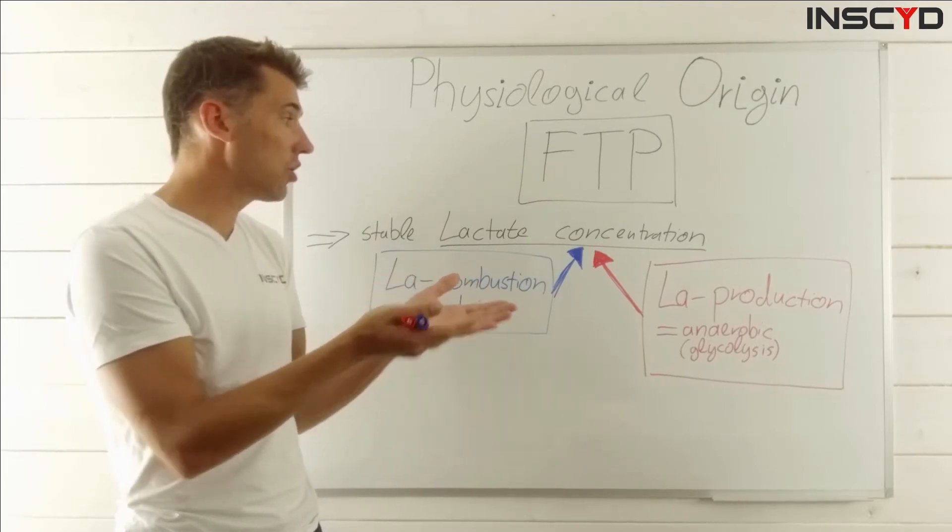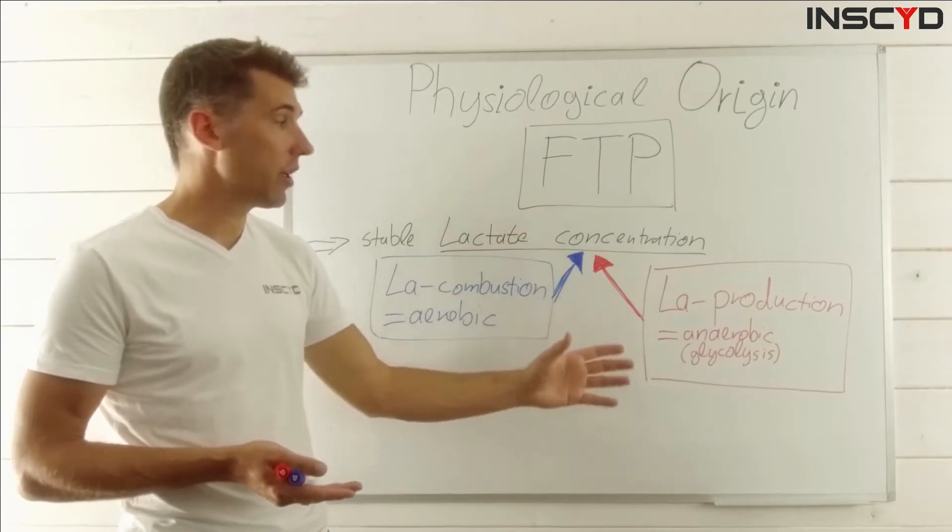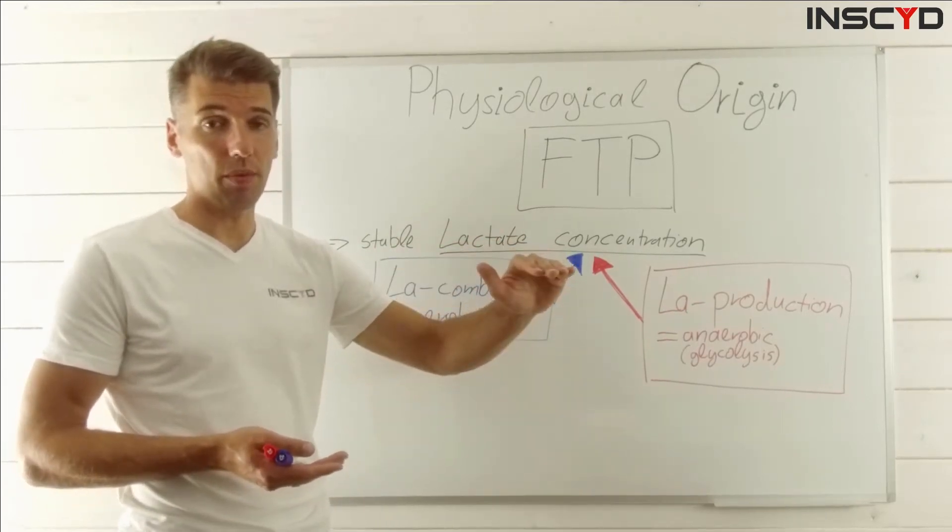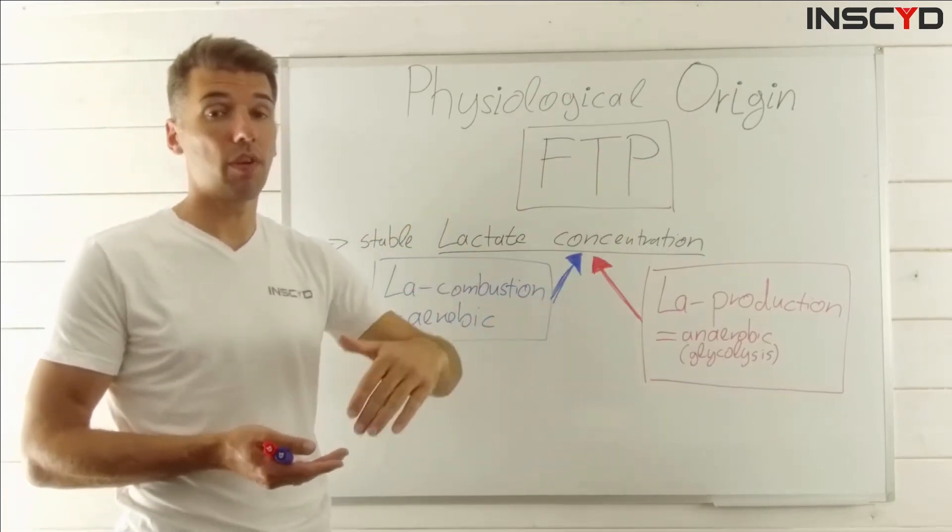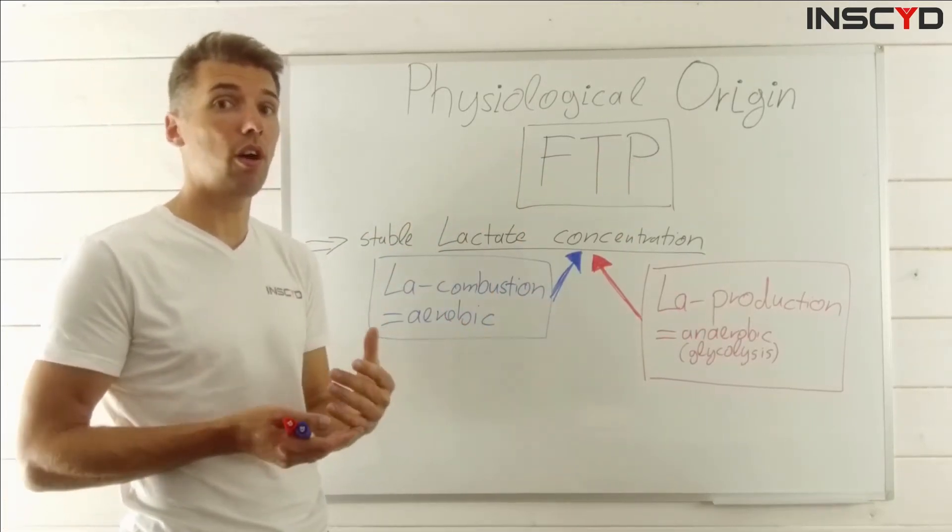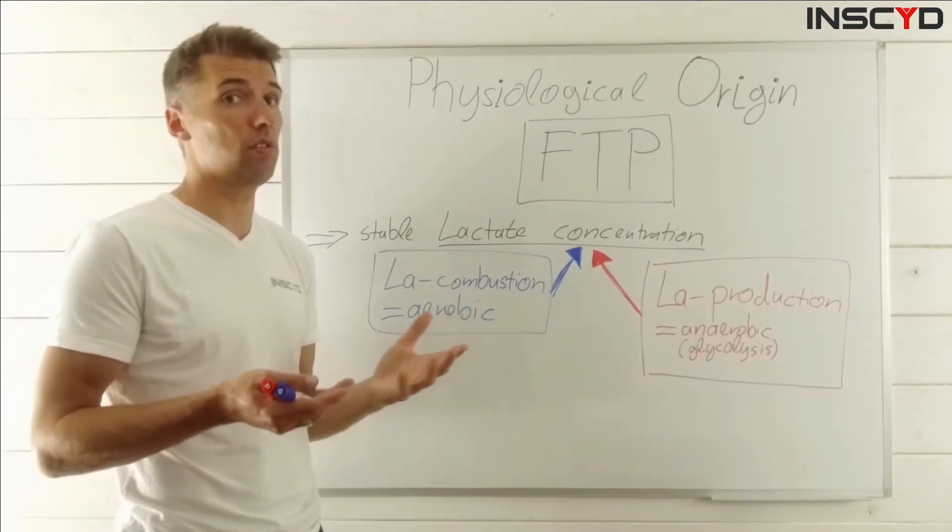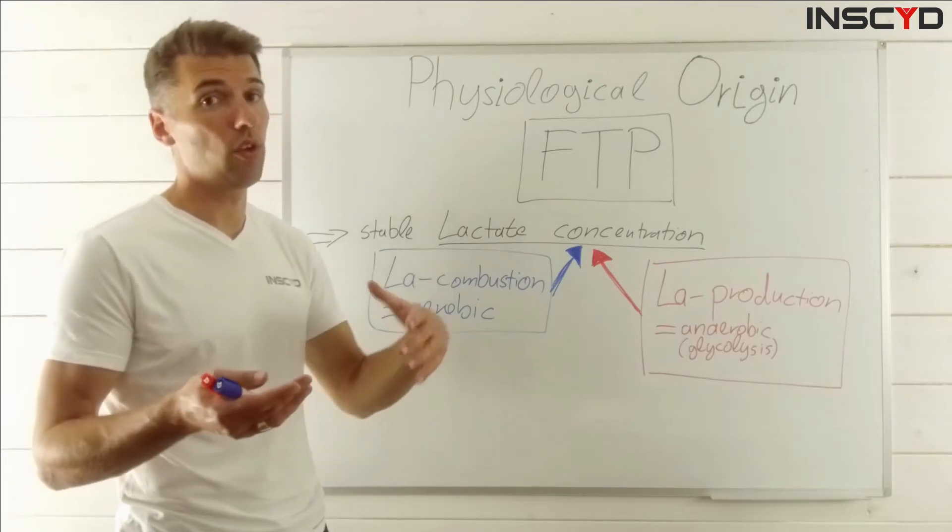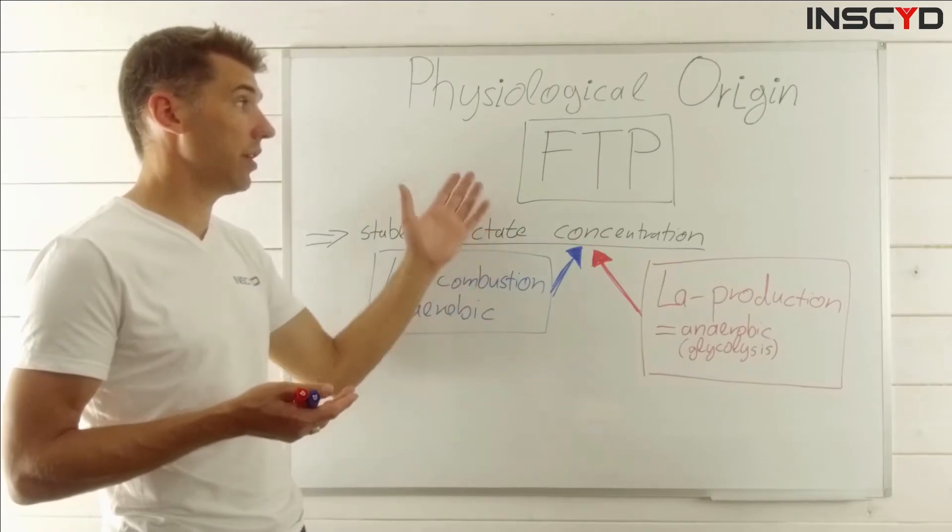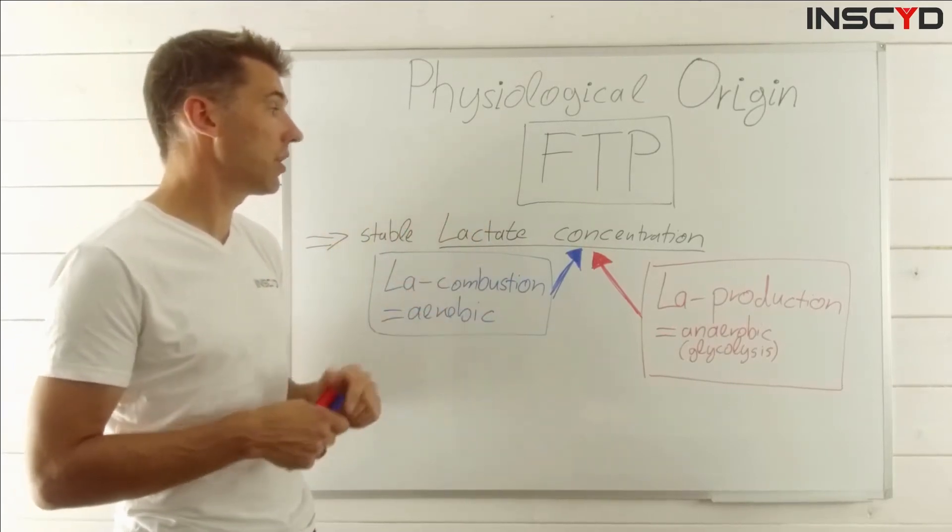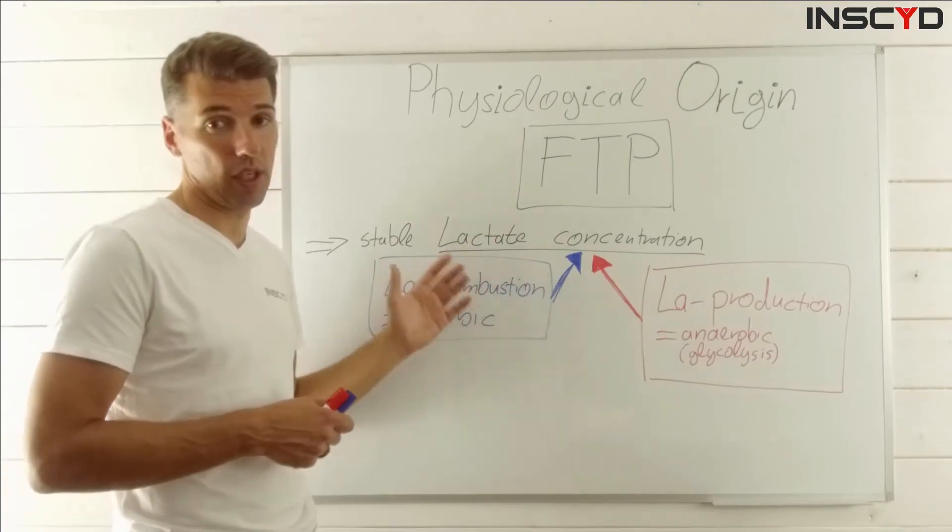These two - the lactate production, how much lactate is produced, and on the other hand how much is combusted - these two create the concentration. These two will determine if lactate concentration stays stable, hence you are below or at FTP, or if lactate concentration will increase as a marker of fatigue and lead to exhaustion sooner or later, hence you are exercising above FTP. So lactate concentration or the maximum lactate steady state, which is what FTP is trying to approximate, is determined by lactate production and lactate combustion.